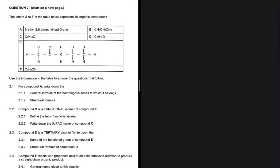General formula of the homologous series to which compound A belongs. So if you look at compound A, you will realize that we have hept-3-yne. From that, we know it's an alkyne. And then what is the general formula of an alkyne? So for 2.1.1, we have CnH2n-2.